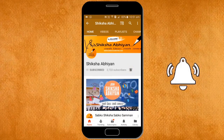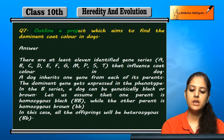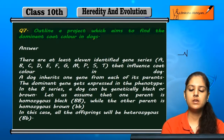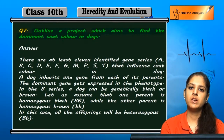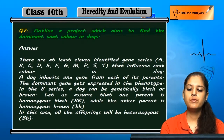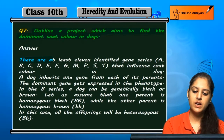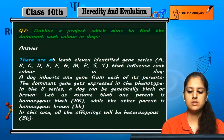Question 7: Outline a project which aims to find the dominant coat color in dogs. To find out the dominant coat color, there are at least 11 identified gene series.